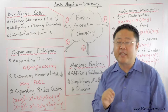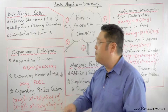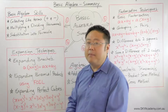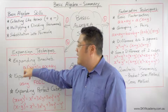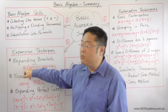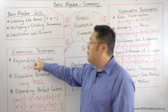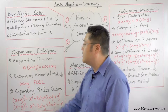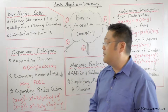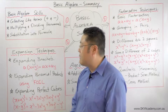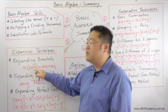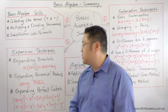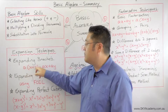After looking at basic algebra skills, we moved on to expansion techniques. When expanding brackets, we use the distributive law, which allows us to take the number or pronumeral at the front and multiply by each of the expressions within a set of brackets. Multiplication is distributive over addition — so when you multiply, you have to multiply each of the terms being added together.